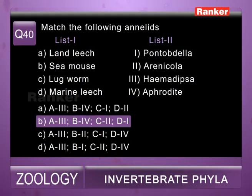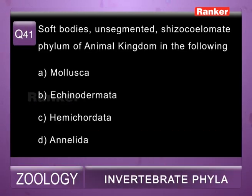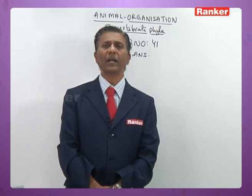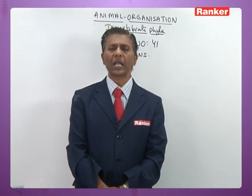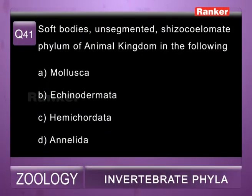Question forty-one: soft-bodied, unsegmented, schizocoelomateate phylum of animal kingdom — a) Mollusca, b) Echinodermata, c) Hemichordata, d) Annelida. Molluscs are soft-bodied, unsegmented, schizocoelomateate animals. So forty-first question correct answer is a) Mollusca.